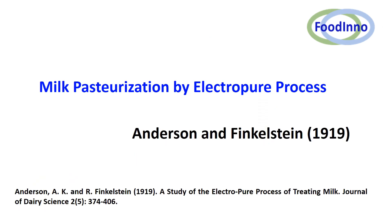In 1919, Anderson and Finckelstein presented milk pasteurization by the electropure process using alternating current. The process involved the application of electric current directly through milk, resulting in the generation of heat responsible for bacterial death. In the original setup, ohmic heating units were arranged in a series of five porcelain cups, where milk entering the first cup drained into the second and so on until the fifth cup. The electrodes were insulated rods terminating in a copper disc, one placed at the bottom and another at the top, with alternating current applied.